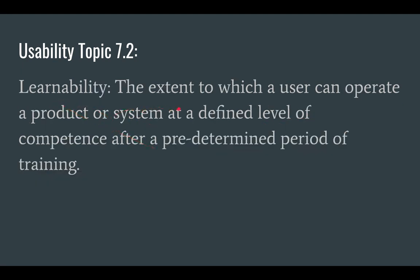Learnability is the extent to which a user can operate a product or system at a defined level of competence after a predetermined period of training — essentially, how easy is something to learn? Going back to the calculator example, it probably took quite a long time to figure out many of the functions. Similarly, Fusion 360 takes a lot of time to learn. We have to decide what competence we want and how long training should last.